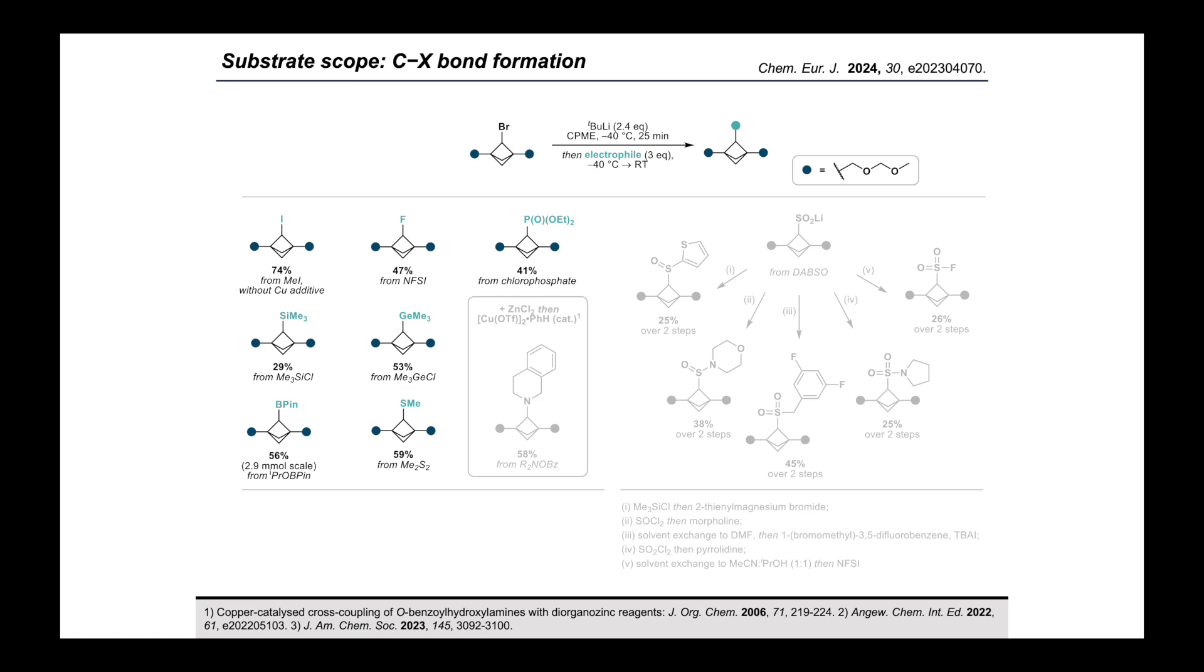Synthesis of the BCP monofluoride is significant, since the only practical alternative is a procedure reported by Enamine in 2022, which is the addition of bromofluorocarbene to aryl-linked bicyclo[1.1.0]butanes, followed by Raney nickel reduction of the bromide.